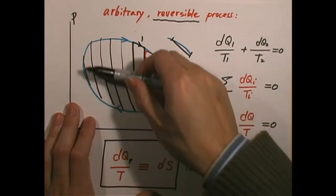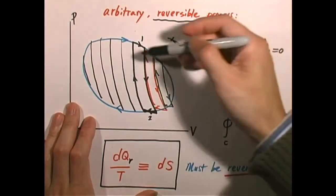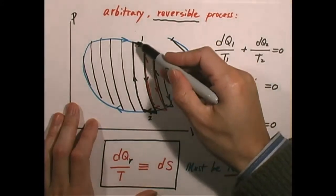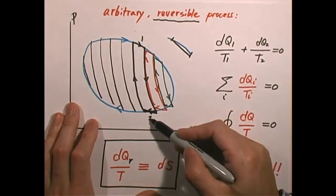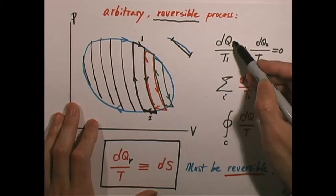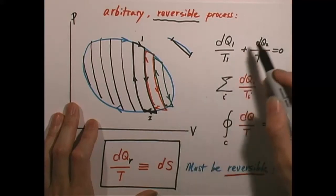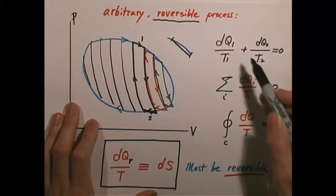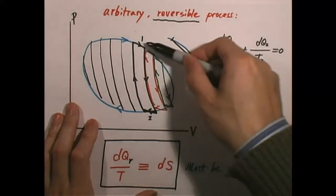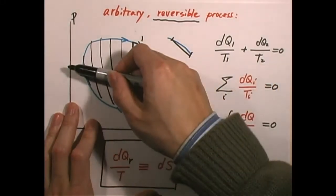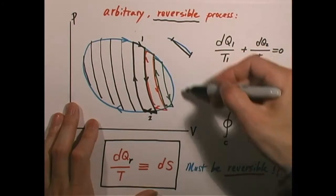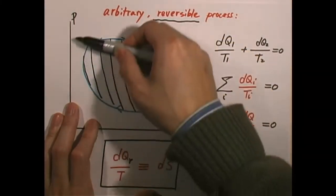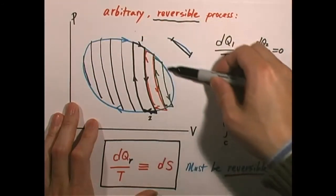So effectively, this arbitrary reversible cycle can be broken down into a whole bunch of Carnot cycles, each with tiny isothermal steps. For a typical sub-cycle, the heat absorbed during isothermal expansion is DQ1 at temperature T1, and during isothermal contraction the heat released is DQ2 at temperature T2. Since this is a Carnot cycle, DQ1 over T1 plus DQ2 over T2 equals zero. Adding all sub-cycles together, we find the sum of DQi over Ti equals zero for the entire cyclic process.